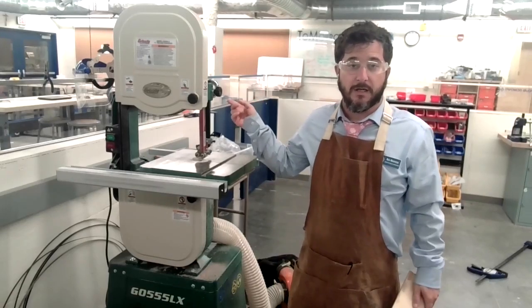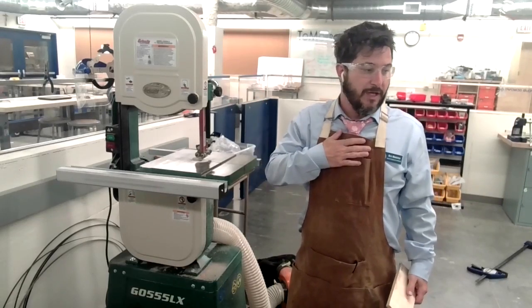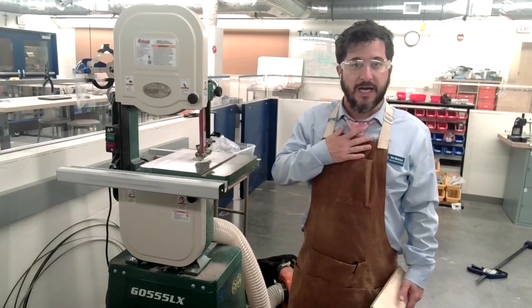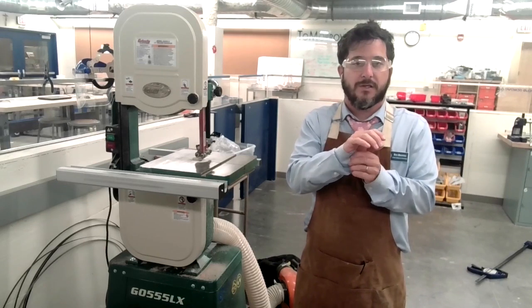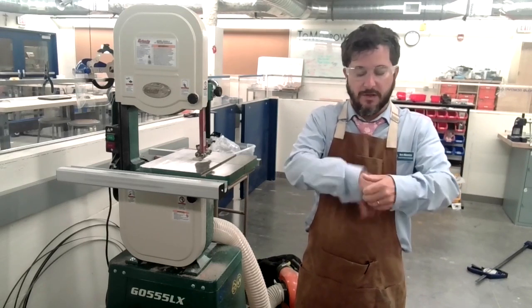Right, we're going to talk about the bandsaw. So you'll notice I have an apron on, which is going to cover my tie. I could also take off my tie. I need to roll up my sleeves so that my sleeves don't get caught.